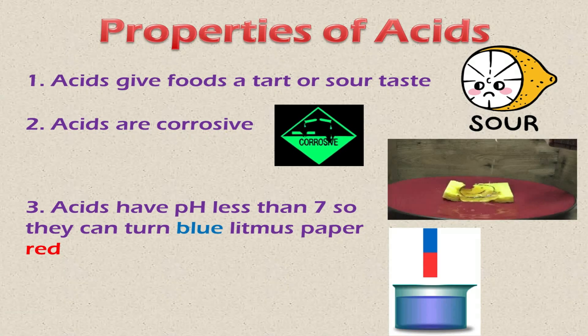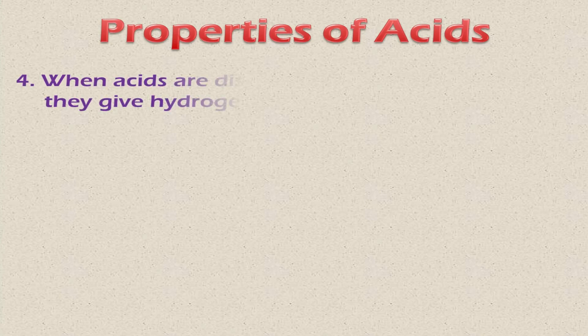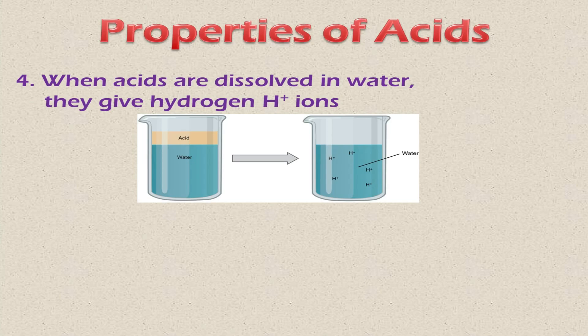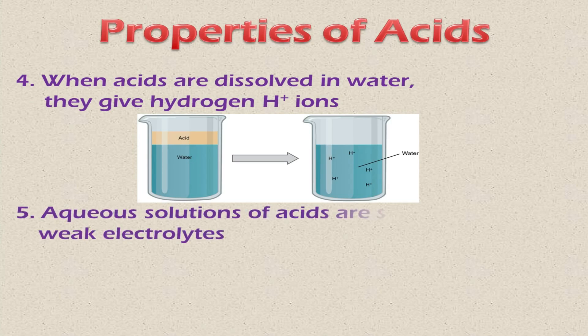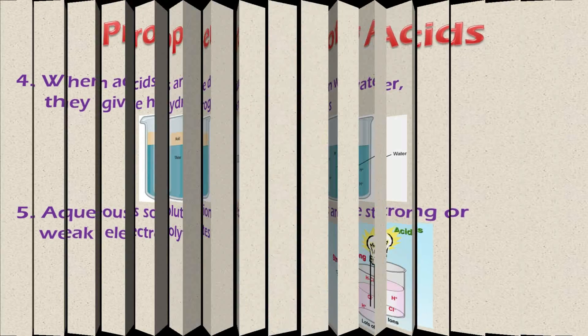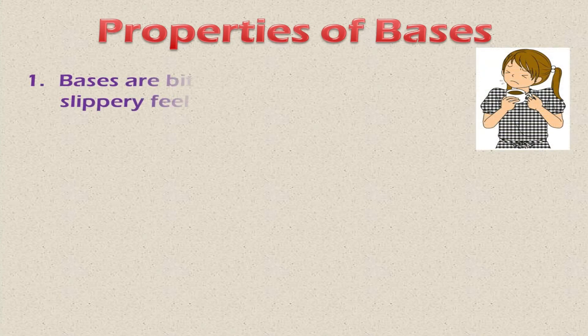If you dip a blue litmus paper in acid, it will convert to red. Some other properties of acids: whenever acids are dissolved in water, they give hydrogen ions, also called H⁺ ions or sometimes protons. Aqueous solutions of acids are either strong electrolytes or weak electrolytes, meaning they can conduct electricity.